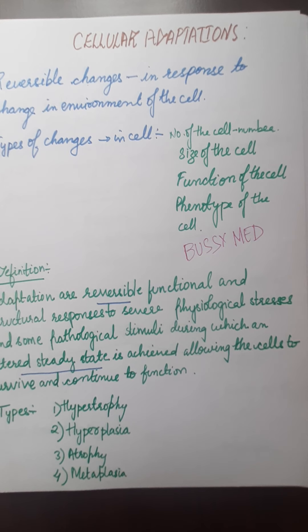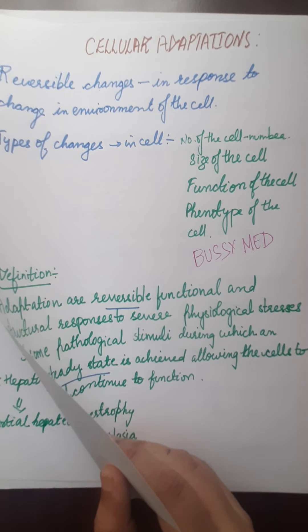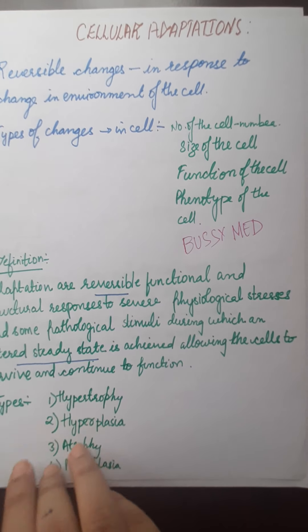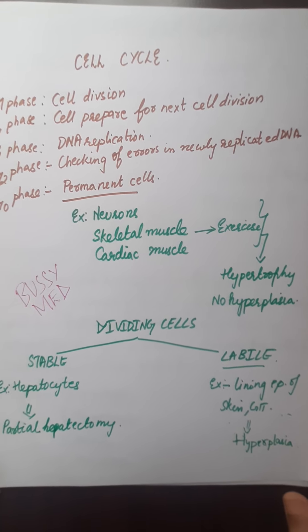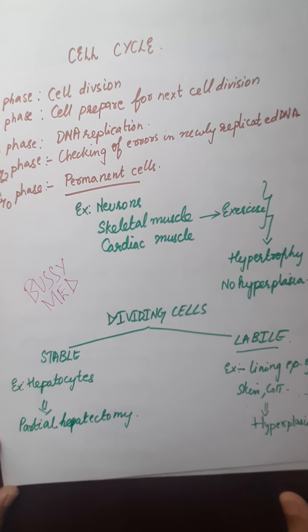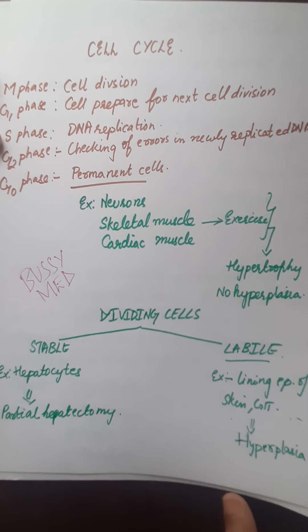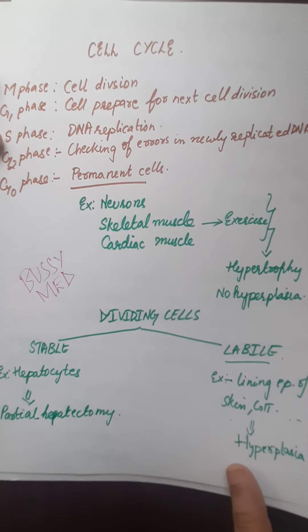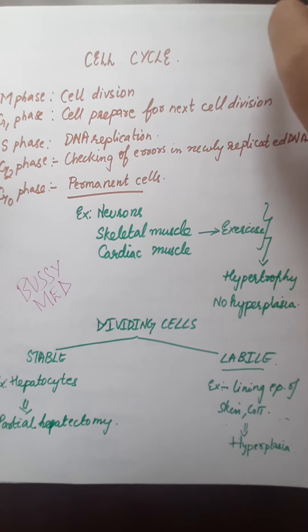In hepatocytes, hyperplasia is taking place. The dividing cells are divided into stable cells and labile cells. Stable cells are those which divide when needed — for example, in hepatocytes, in partial hepatectomy the hepatocytes start dividing. Whereas labile cells are continuously dividing — for example the lining epithelium of skin and GIT — so that is hyperplasia taking place in the dividing cells.